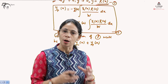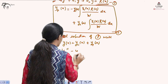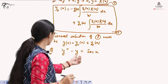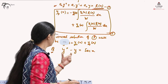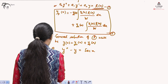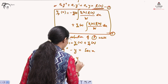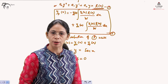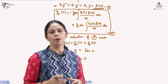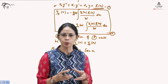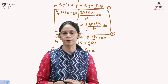Suppose a non-homogeneous differential equation is given. For example, Y'' − Y = sec(x). The right-hand side is not zero, but we set it to zero to find the complementary function. We write down the characteristic equation, which is λ² − 1 = 0, giving λ = ±1. So we have two values of lambda.